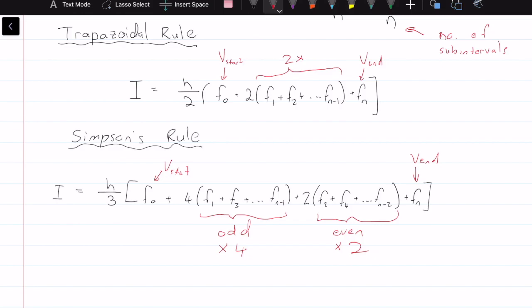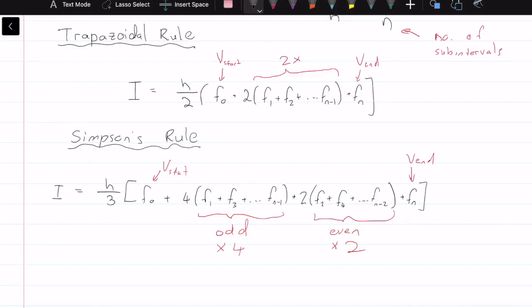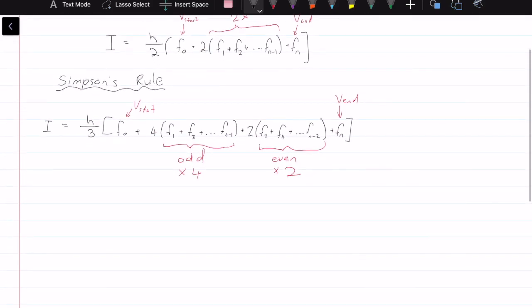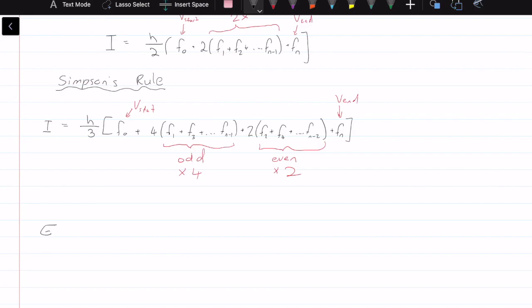The best way to understand what's actually happening is to carry out an example. The example we will be is evaluating this function 0 to 1 of 1 over 1 plus x squared dx, and let's say we want n to be equal to 6 subintervals.